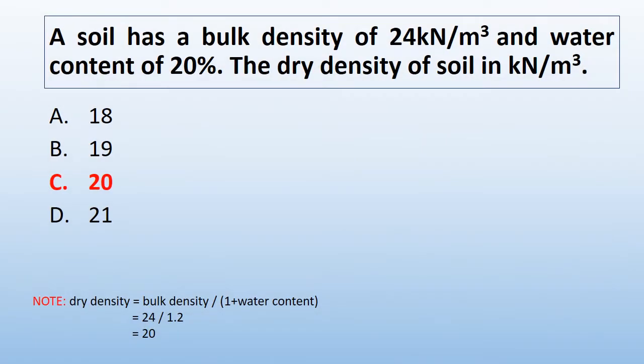A soil has a bulk density of 24 kN/m³ and a water content of 20%. The dry density of the soil is calculated as: dry density equals bulk density divided by (1 plus water content) equals 24 divided by 1.2, which equals 20 kN/m³.